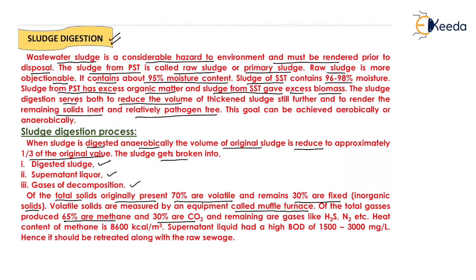Methane is largely present in the sludge when it is digested anaerobically. The remaining gases include H₂S, N₂, etc. The calorific value of methane is 8600 kilocalories per cubic meter, which is very high. The supernatant liquid has a high BOD of 1500 to 3000 milligrams per liter, and hence it should be retreated along with the raw sewage in the activated sludge process or trickling filter.